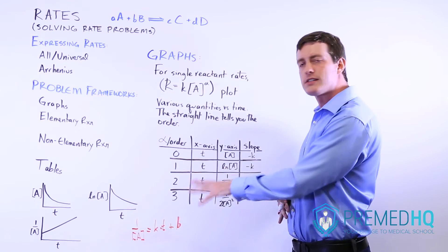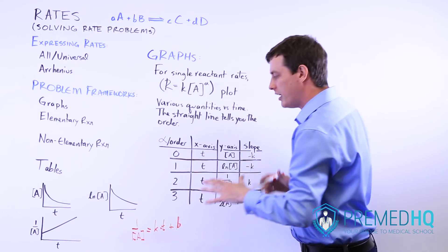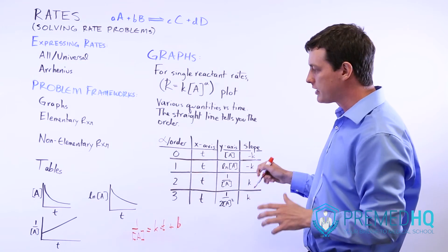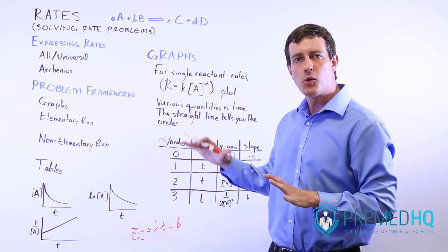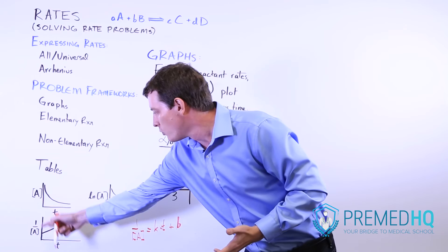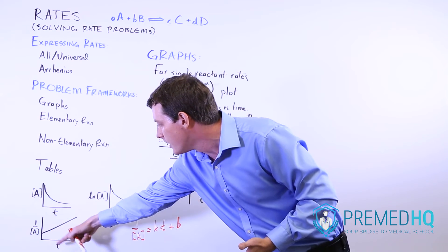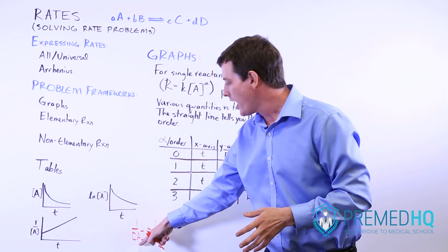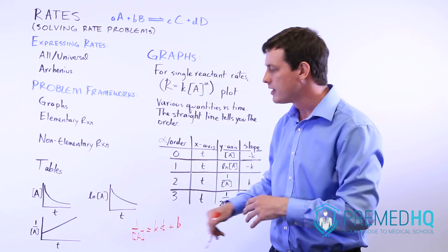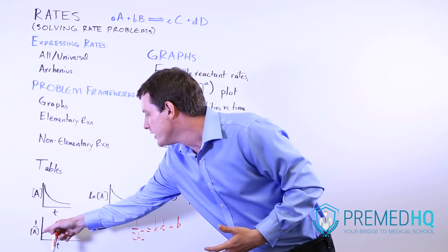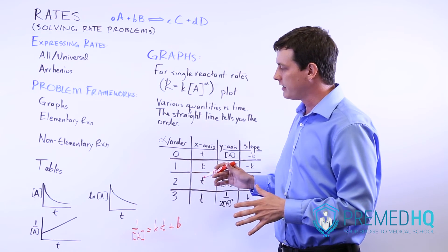And so you can see these things expressed in such a way. And this is the linear equation that works for a second order rate, because y equals mx plus b. That's a straightforward algebra line equation. And our y-axis here is 1 over the concentration of A. Our x-axis is time, and our slope is k. So y equals slope times x plus b, whatever this intercept is. And so that's one way that you can see rates tested on the MCAT.